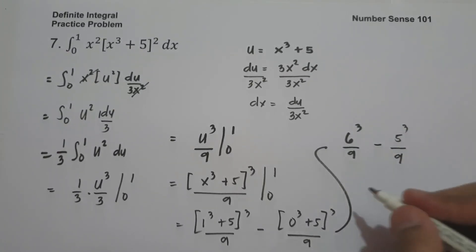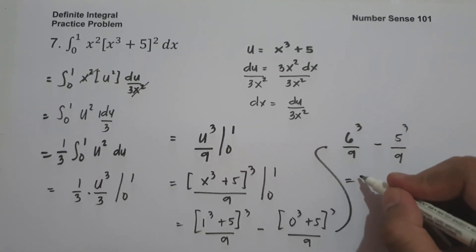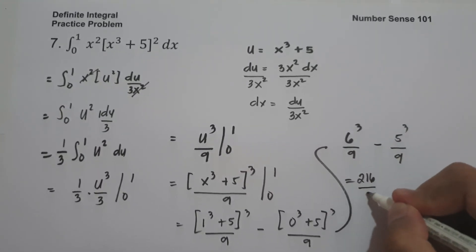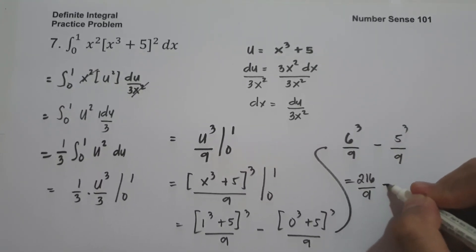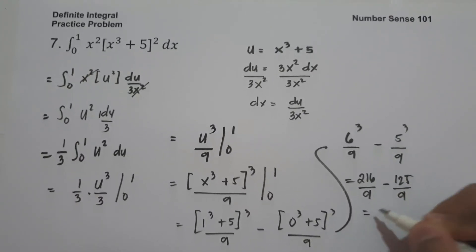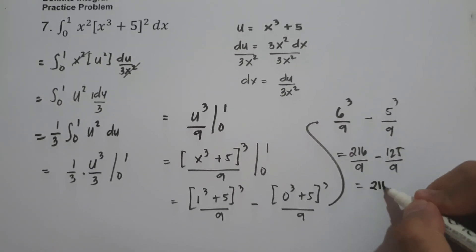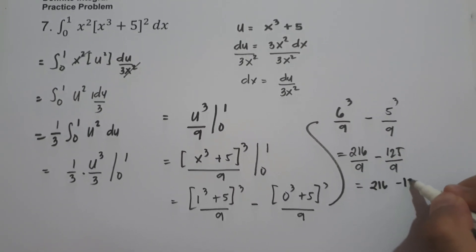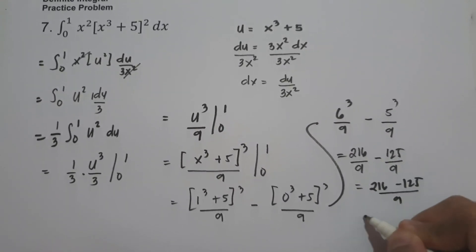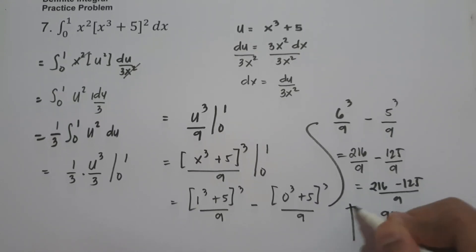Simplifying: 6 cubed is 216 over 9, minus 5 cubed which is 125 over 9. Therefore we have 216 minus 125 over 9, which is 91 over 9. This will be our answer.